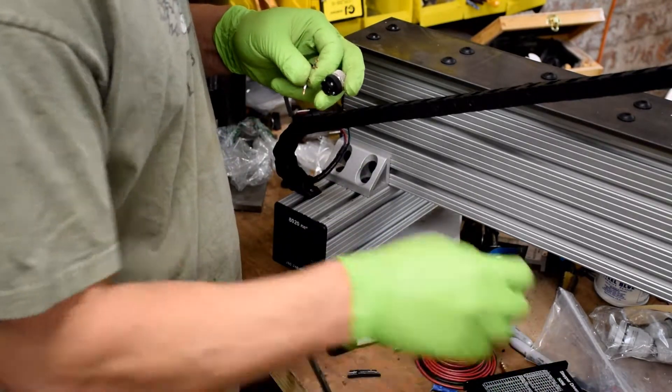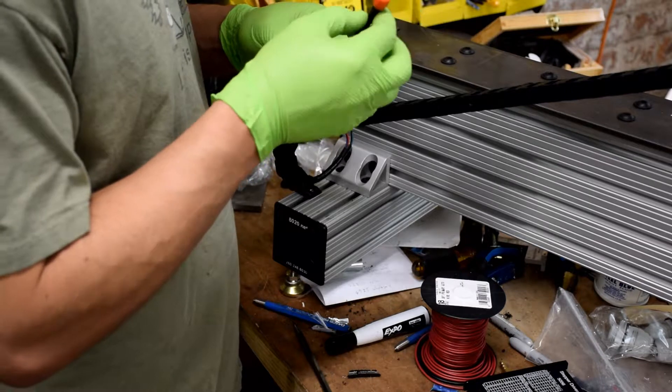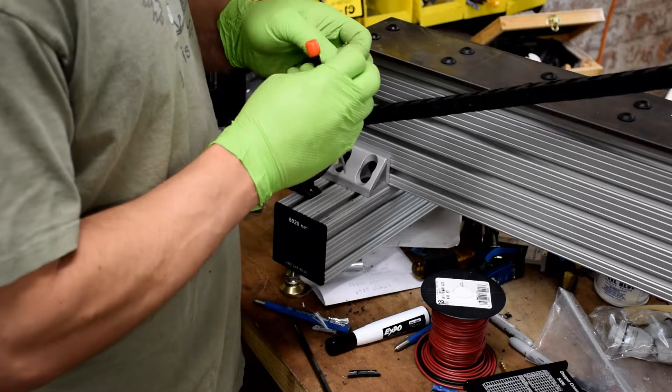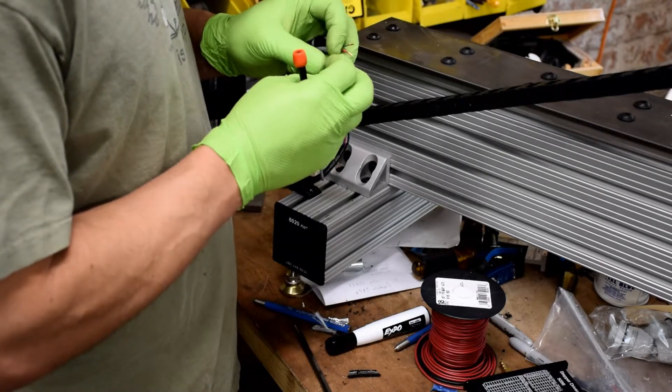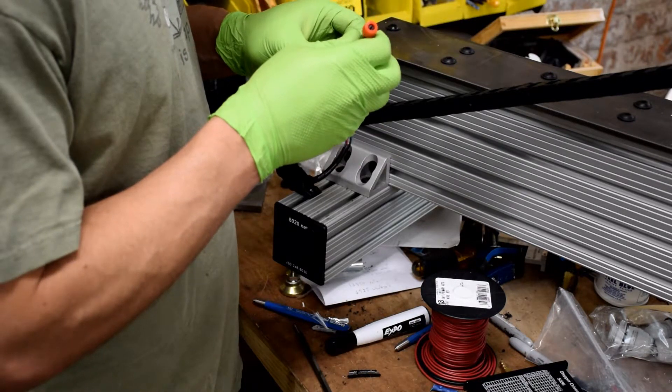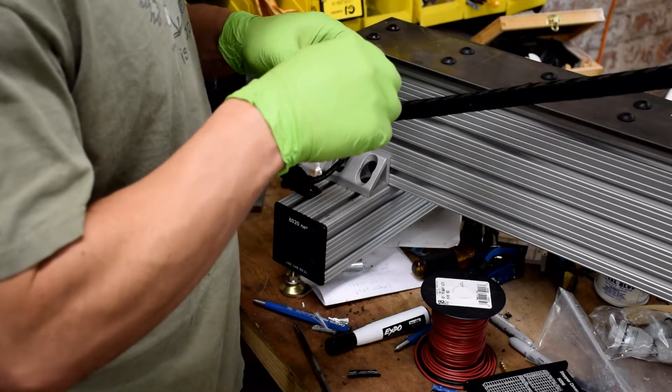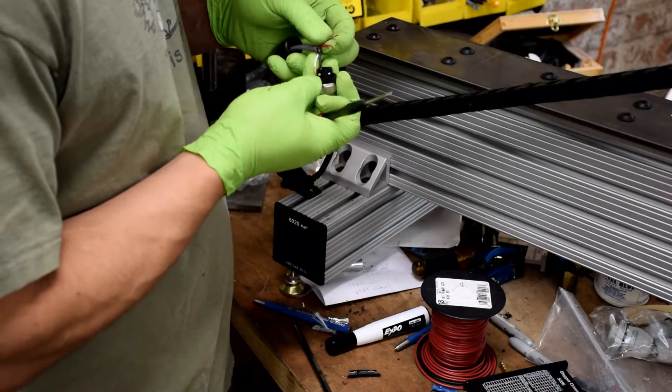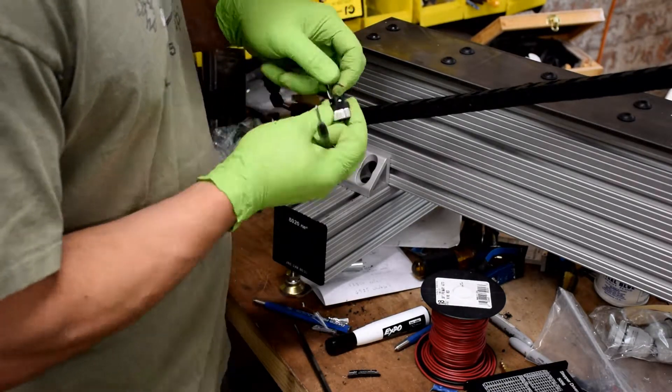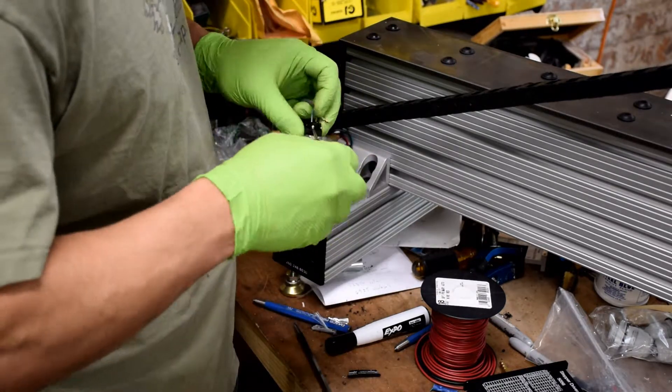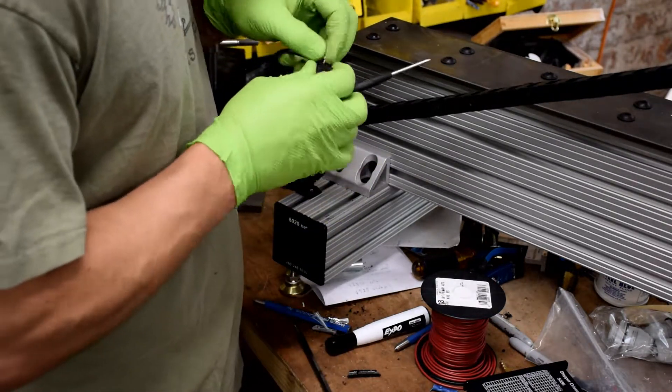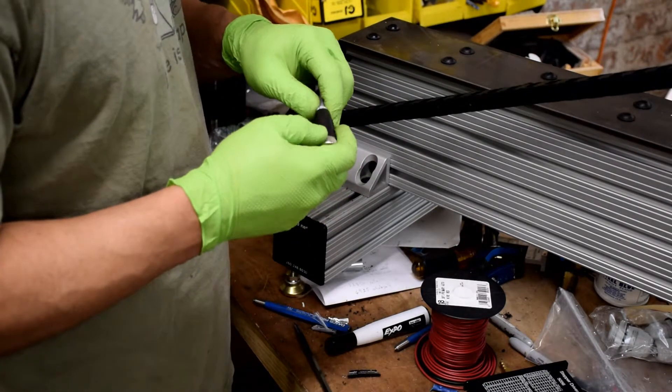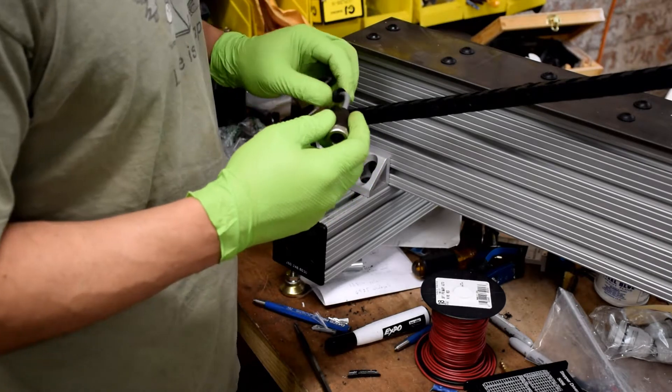There's numbers on here, and the wires are going to be wired up black into number one, green into number two, white into number three, and red into number four. Once you've got those wires terminated, screw the whole assembly back together.